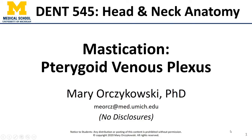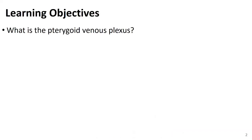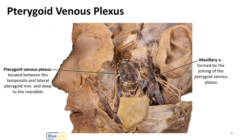Hi everyone, this is Dr. O and in this video we're going to talk about the pterygoid venous plexus. It is really closely associated with the muscles of mastication. Specifically we're going to talk about what is this pterygoid venous plexus. We find it between the lateral pterygoid muscle, which is deep here, and the temporalis muscle, which has been reflected up here. So it is found right in the midst of these muscles of mastication.